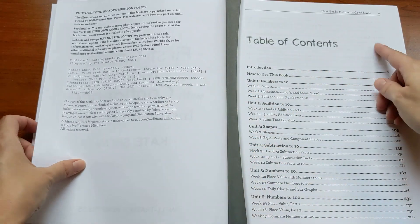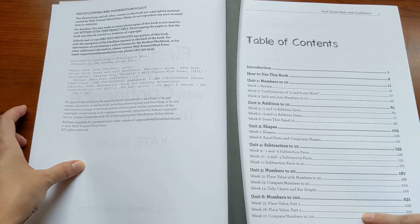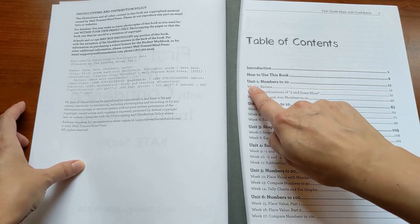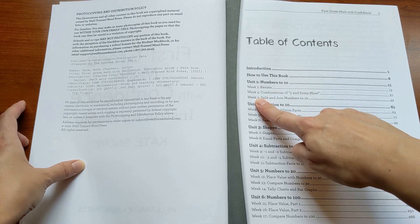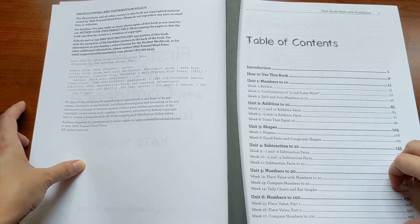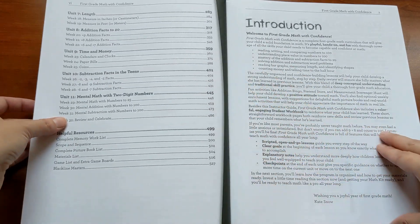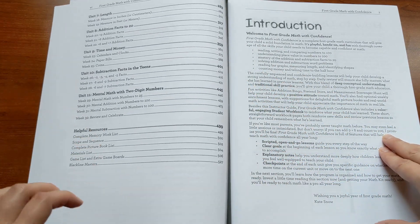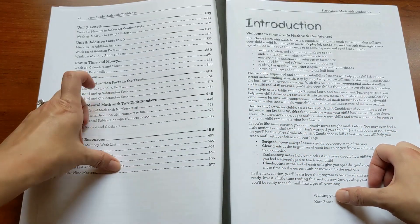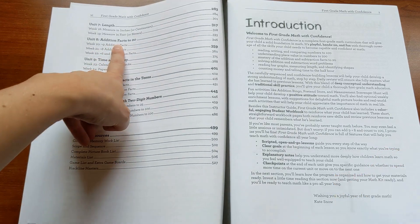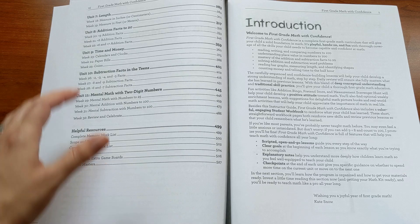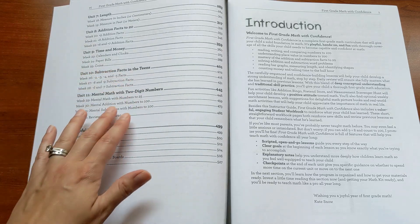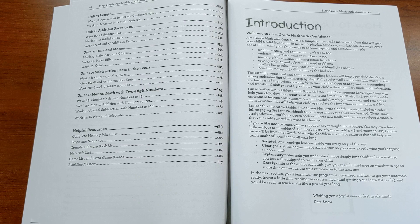So it starts with a table of contents, and you can see that the book is split into units. For example, unit one is numbers to ten, and then there's three weeks of lessons within that unit. It covers all the important first grade topics: counting to 100 and understanding place value, addition facts to 20, time, money, length, and then gets into subtraction facts and mental math by the end of the year with two-digit numbers.